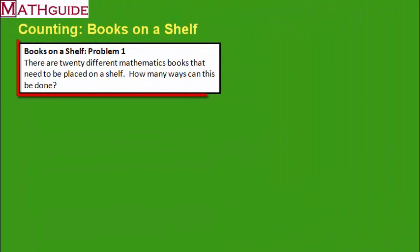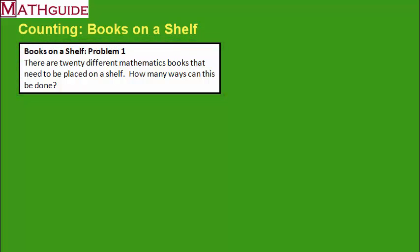Here's our first problem. Let's say there are 20 different mathematics books and we need to place them on a shelf. We want to figure out how many ways we can place these 20 textbooks on a shelf. One common practice in mathematics is to simplify the problem, so let's take an example with only four textbooks.